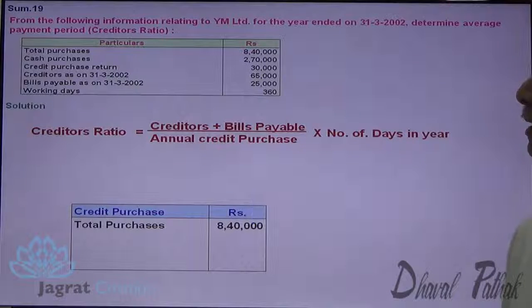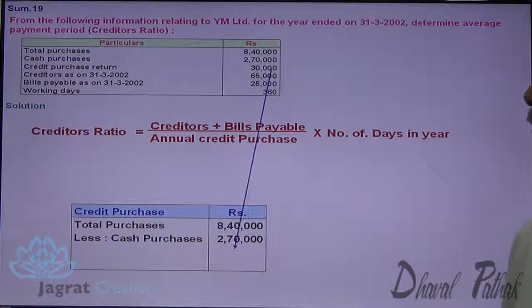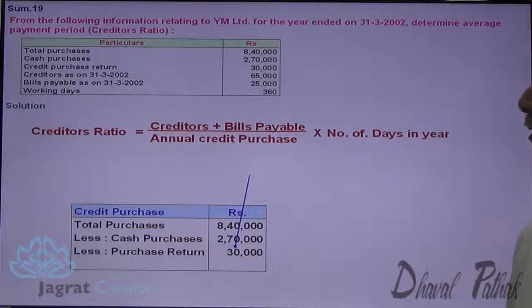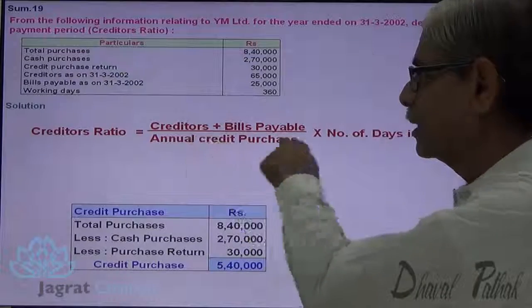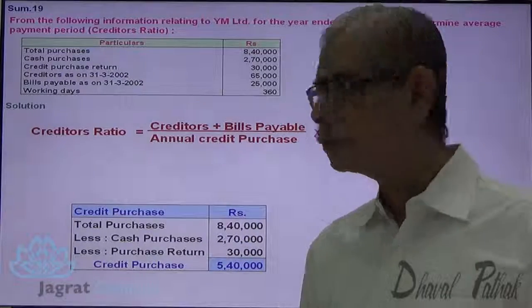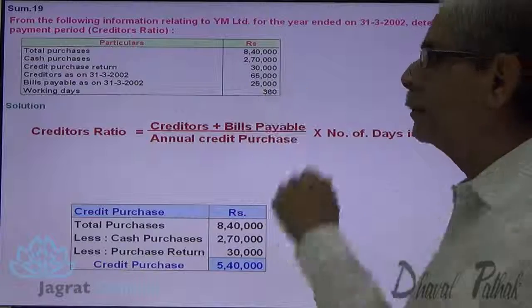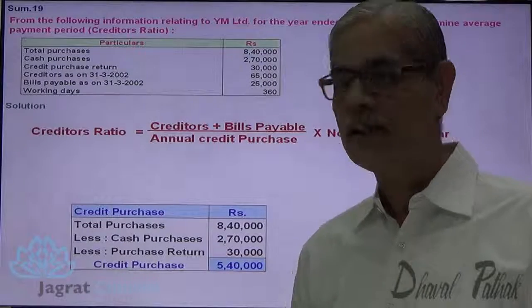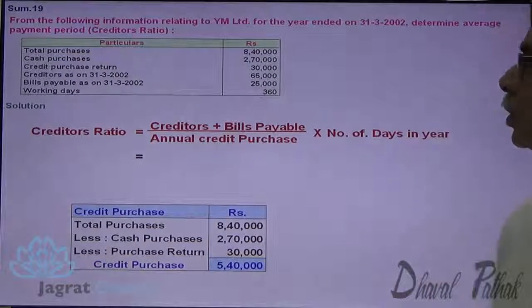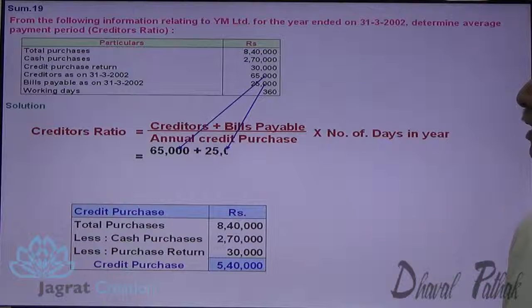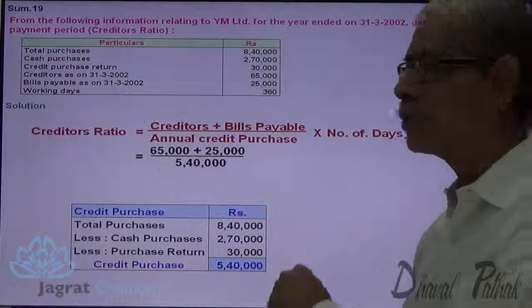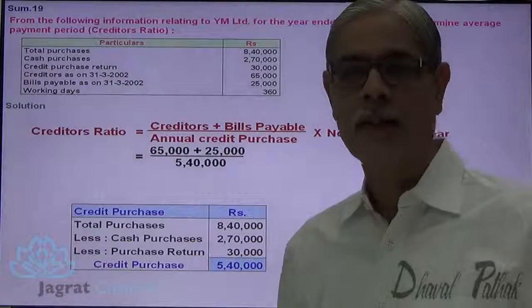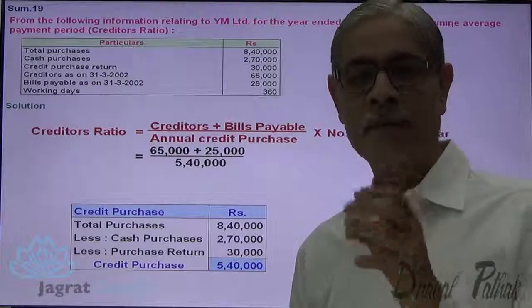From the total purchase, I get the annual credit purchase, which goes in the denominator. Creditors and bills payable are given directly. So: creditors 65,000 plus bills payable 25,000, divided by 540,000. The number of working days to be taken is 360, as specified.